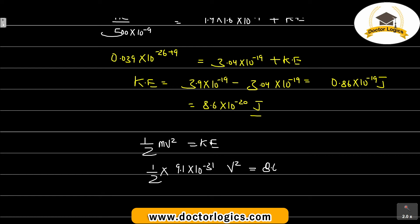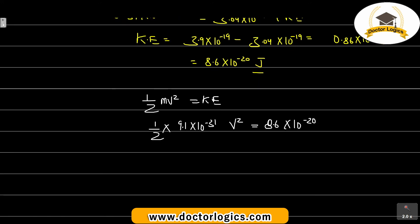Kinetic energy is 8.6 into 10 to the power minus 20. On solving, v square equals 8.6 multiplied by 2 whole divided by 9.1, which gives 1.89.